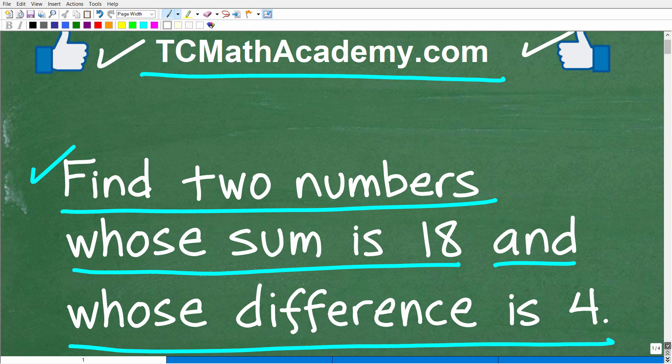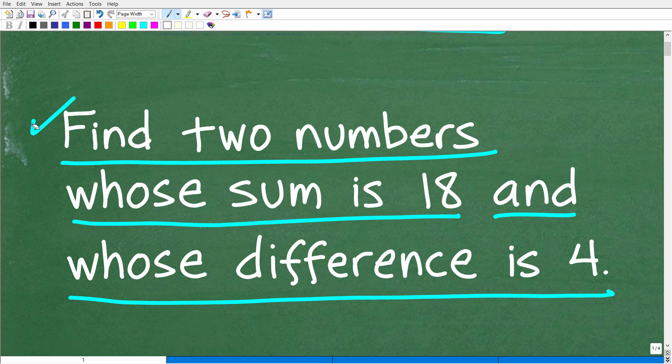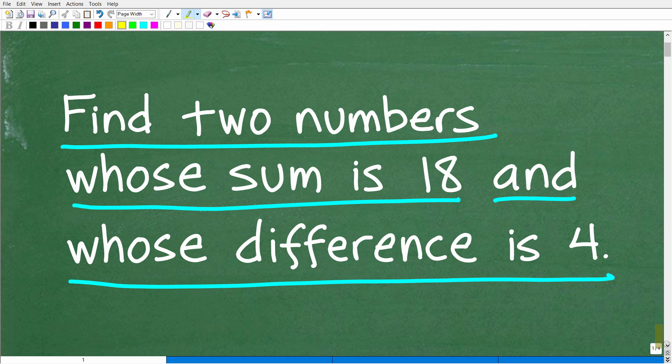Okay, so let's go ahead and take a look at the question one more time before I show you the answer. It's pretty short, but really we're going to have to do a little bit of work to get the right solution. So we're looking for two numbers whose sum, when we add these two numbers up, is 18 and whose difference when we subtract these two numbers is four.